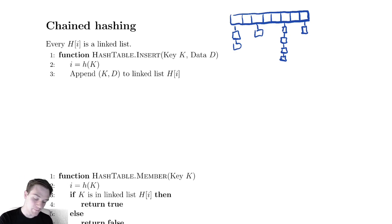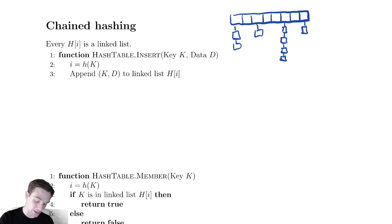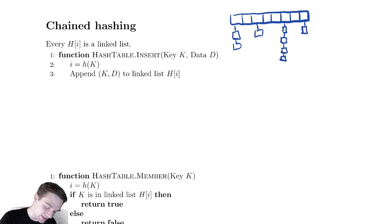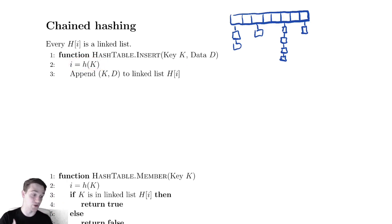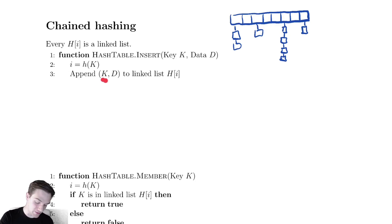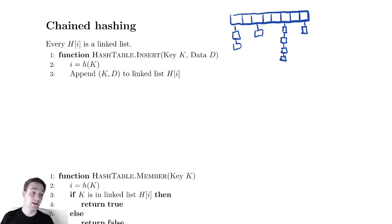In order to insert an element into the hash table, we take our key and our data as input. We then find the location in the hash table that our hash function hashes to for that key. Then we simply append our key-value pair into the linked list at that location. That's nice and straightforward.